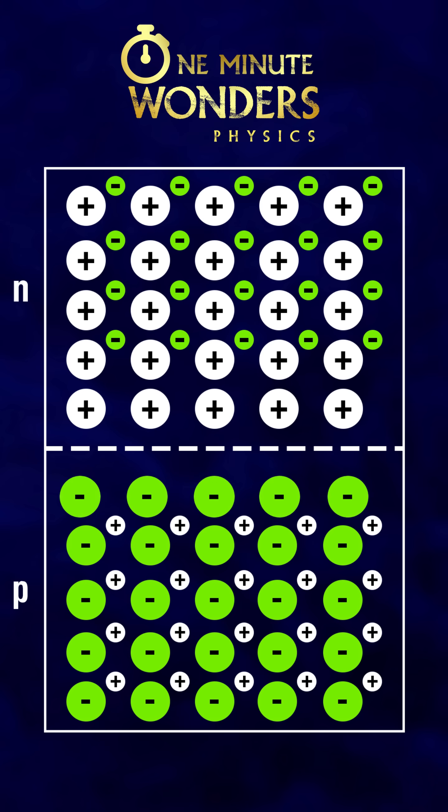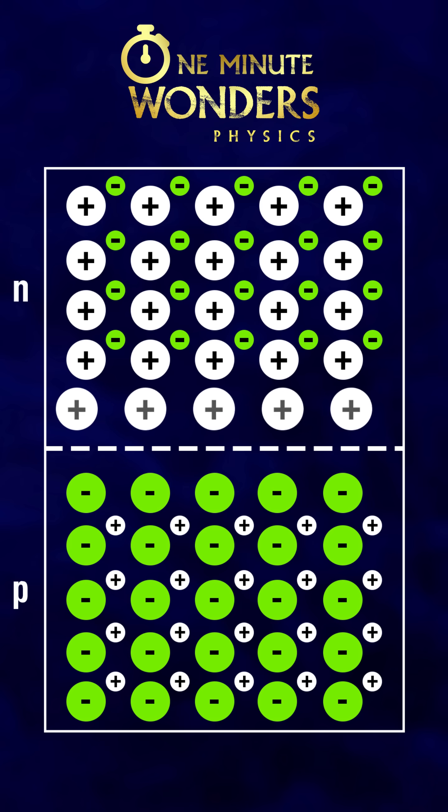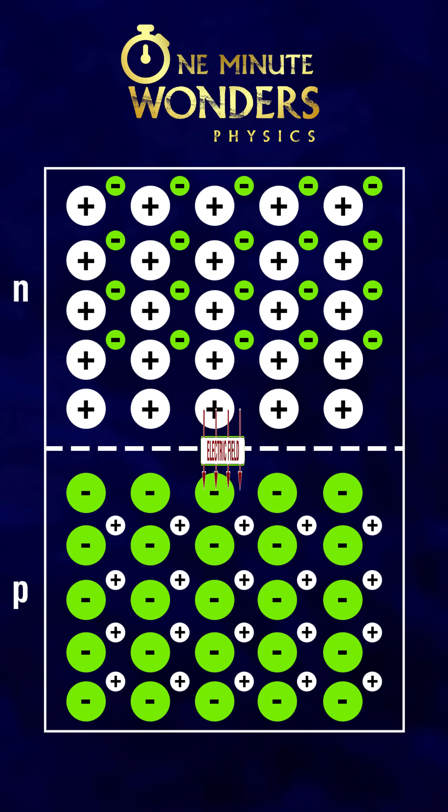As a result, there will be a net negative charge in the P region and net positive charge in the N region. Now we can observe an electric field from N region to P region across the junction.